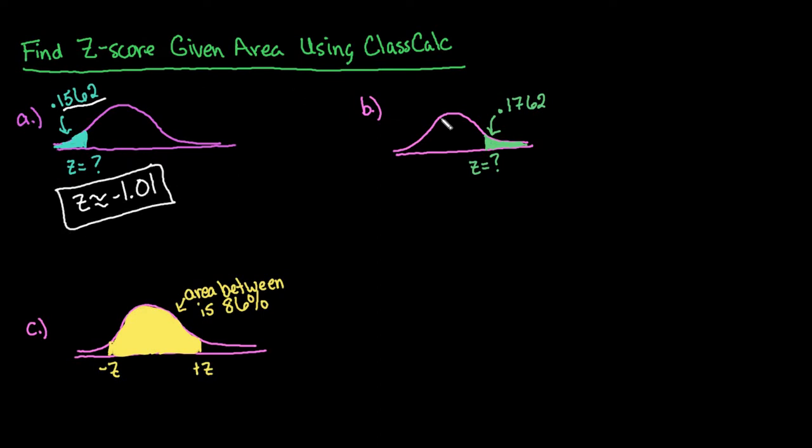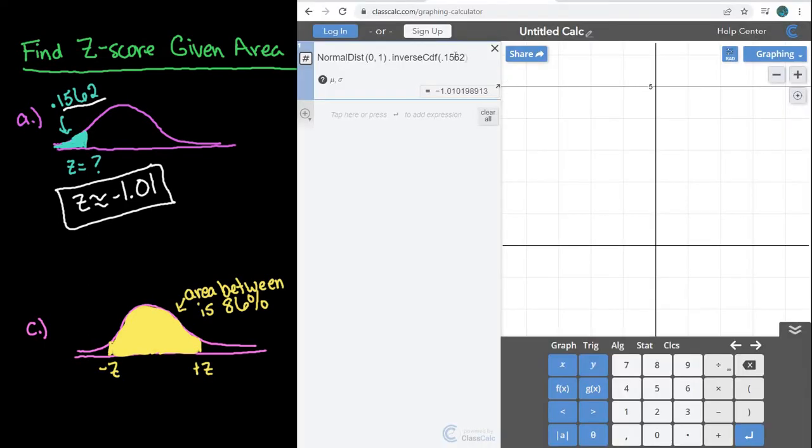Alright, moving into the next one. For this one, we have to first find the area to the left, so we would do 1 minus the area to the right. And I can actually just type it in as this value, 1 minus 0.1762. And so I would just come in here, and I'm going to delete what I have, and just do 1 minus 0.1762. I didn't get rid of the 0.62 because I knew it was going to be there again, and I can see that my z-score is positive 0.93.